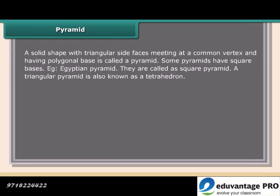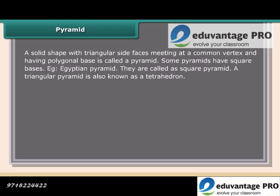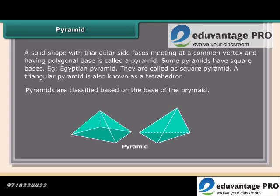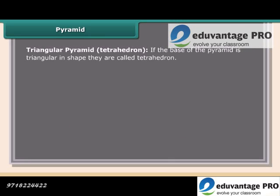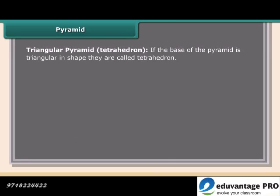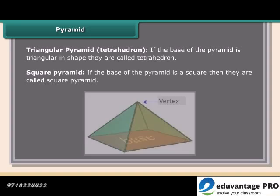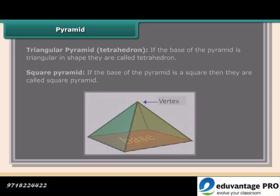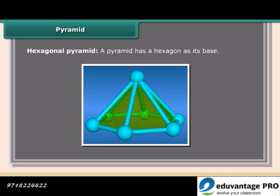A solid shape with triangular side faces meeting at a common vertex and having a polygonal base is called a pyramid. Some pyramids have square bases, such as the Egyptian pyramid — these are called square pyramids. A triangular pyramid is also known as a tetrahedron. Pyramids are classified based on their base: a triangular pyramid is called a tetrahedron, a square pyramid has a square base, and a hexagonal pyramid has a hexagon as its base.